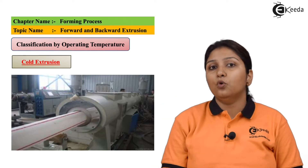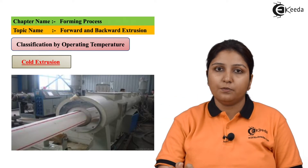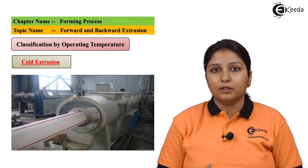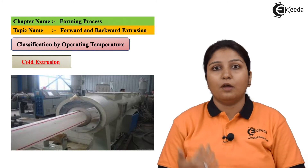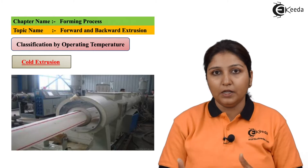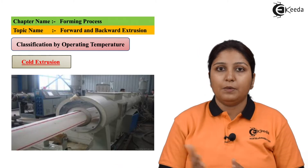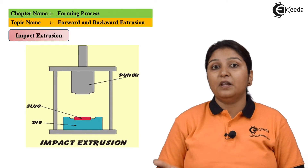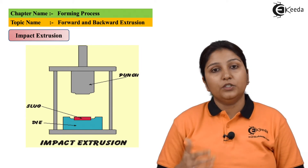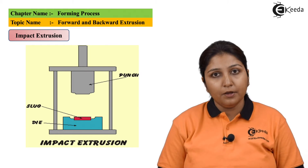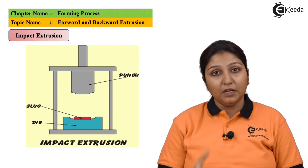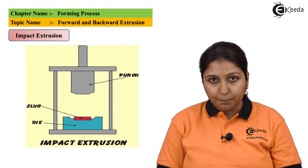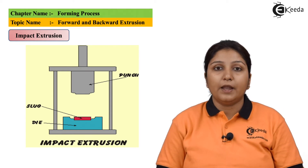After hot extrusion, we come to cold extrusion. This is a normal extrusion process done in a normal environment — no heating. All the process is the same: you use your ram, the material gets pushed and comes out. Impact extrusion is a kind of press forging process in which your material is kept, there is a hammer which acts as your punch, your slug or material is placed and gets punched, taking the shape of the die.